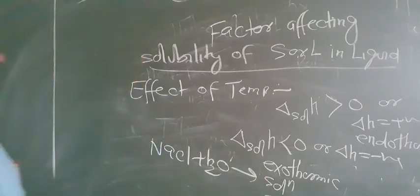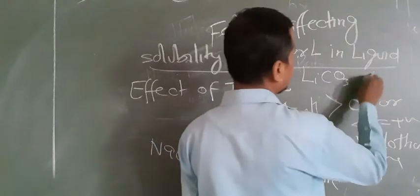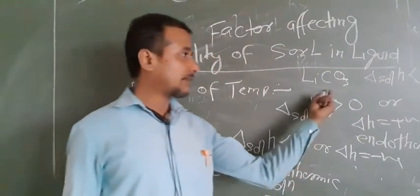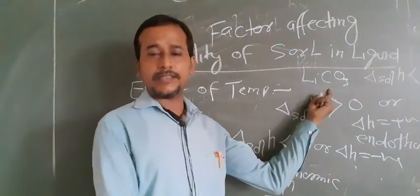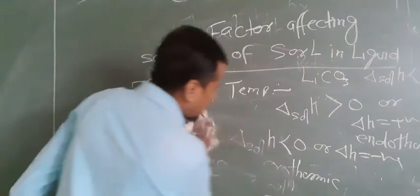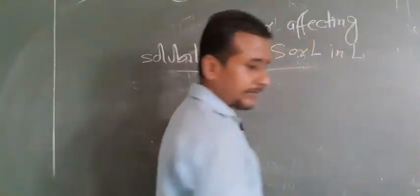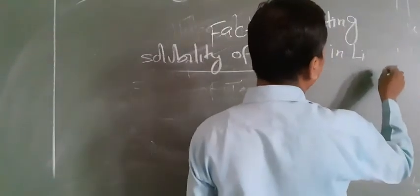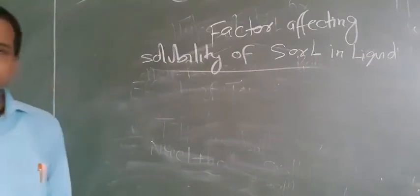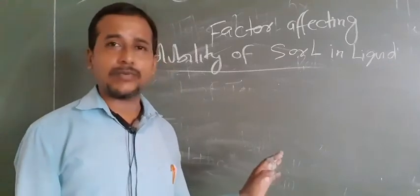For lithium carbonate, delta solution H is less than zero — the reaction is exothermic — and if you increase the temperature, the solubility decreases. So to summarize: if delta H is positive (endothermic), increasing temperature increases solubility; if delta solution H is less than zero (exothermic), increasing temperature decreases solubility.